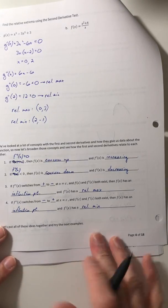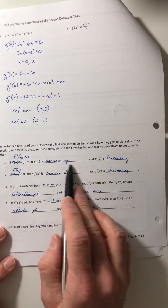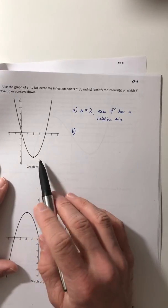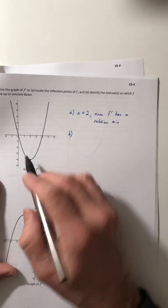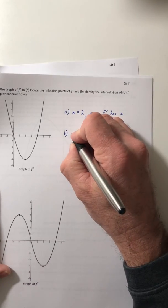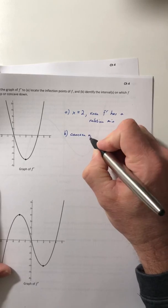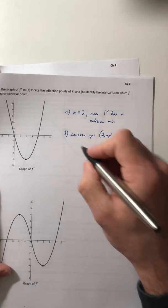For part B: if the second derivative is positive, you know you've got concave up, which means the first derivative is increasing. If you look at the graph of the derivative, where is the graph increasing? That would be from 2 on — so 2 to infinity.